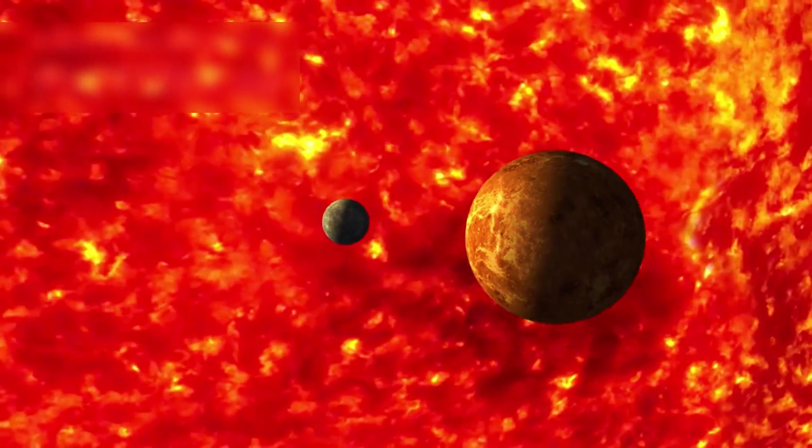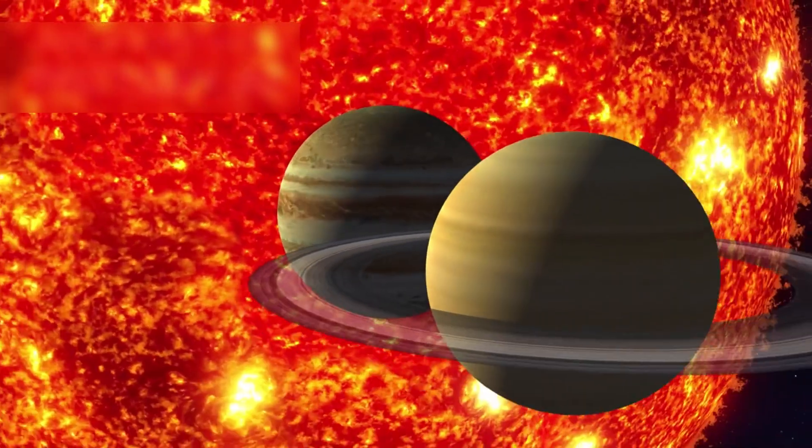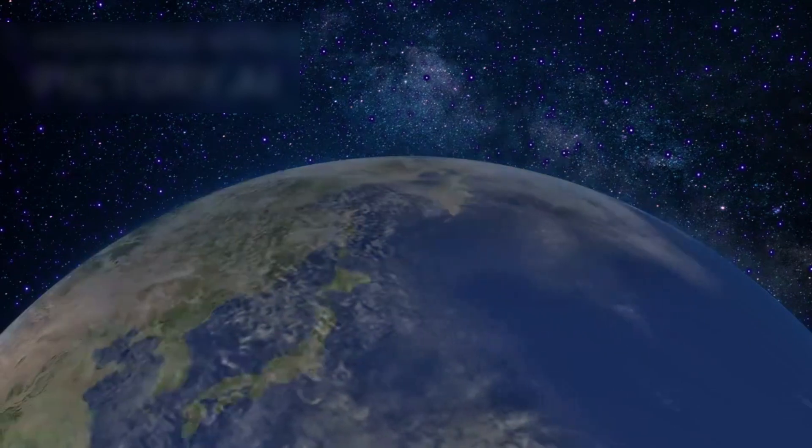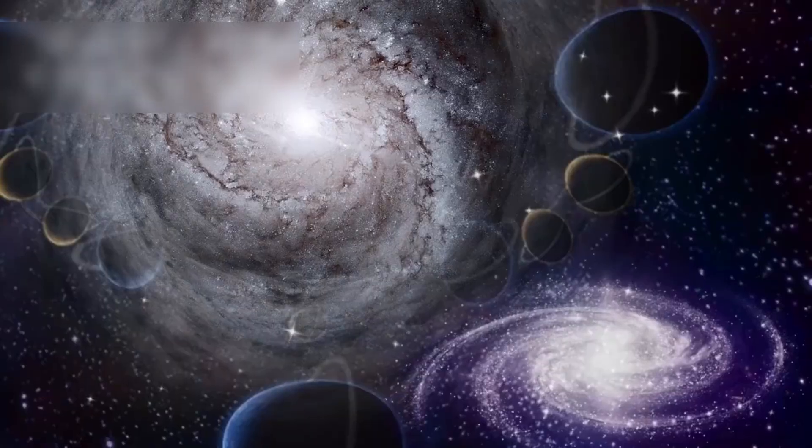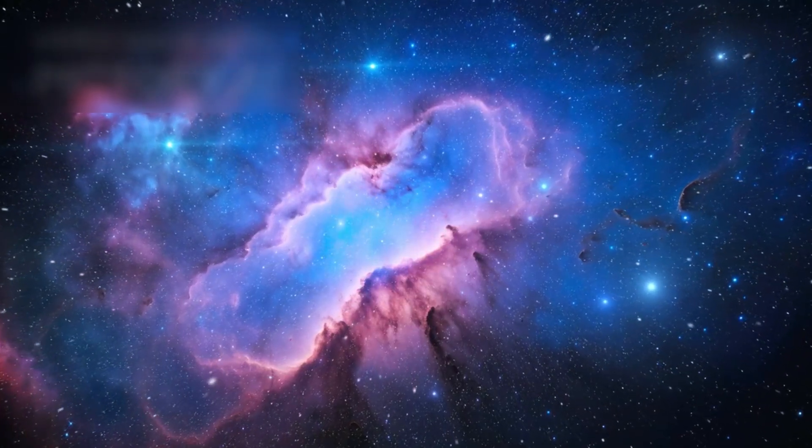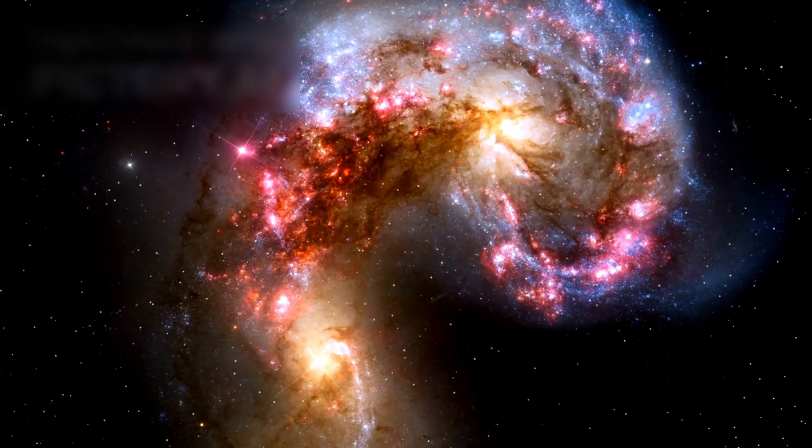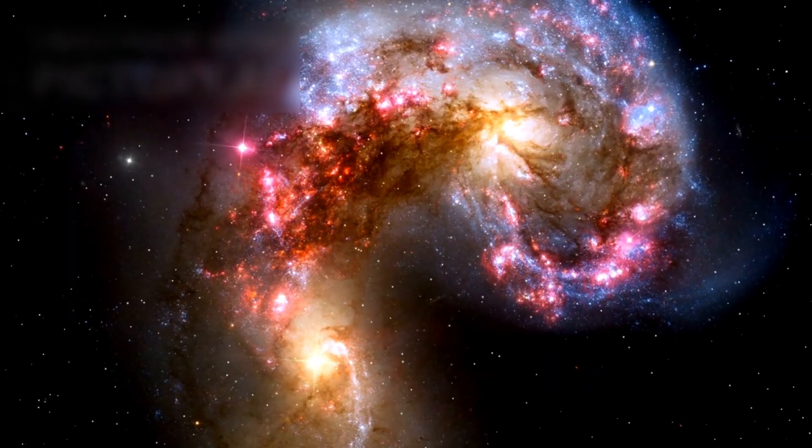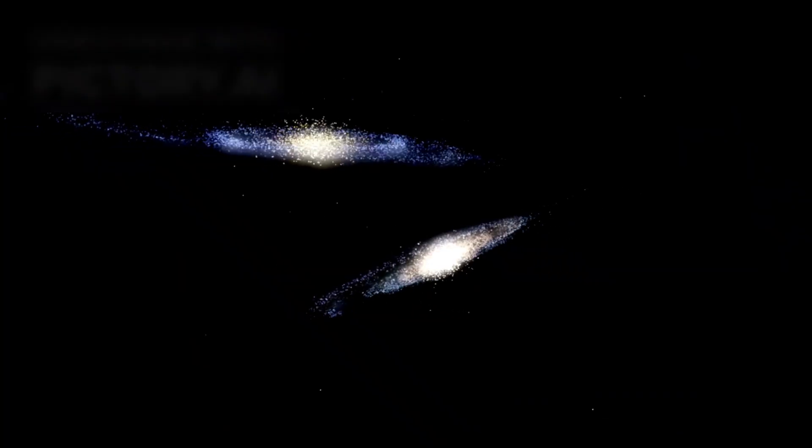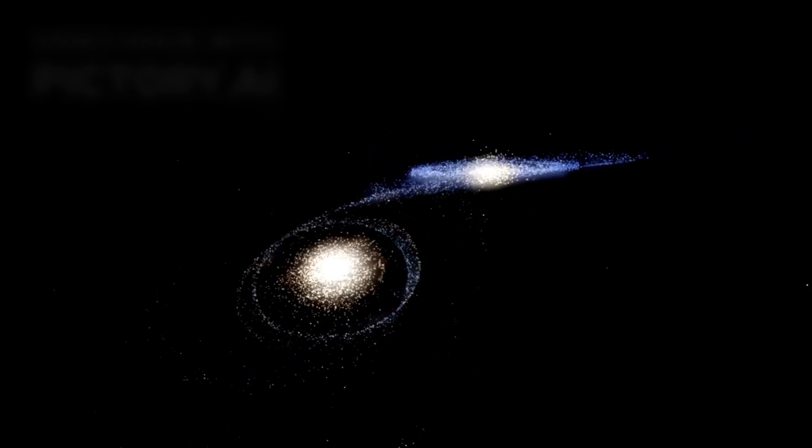To illustrate, imagine shrinking our entire solar system down to the size of a quarter coin placed somewhere on a map of the United States. On that scale, the entire Milky Way galaxy would be the size of planet Earth. Beyond our galaxy, there are many more. Our closest galactic neighbor, Andromeda, lies 2.5 million light-years away and contains an estimated 1 trillion stars. It's currently on a slow collision course with the Milky Way.